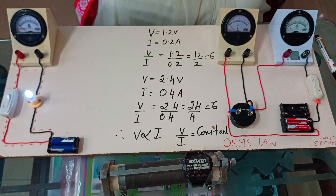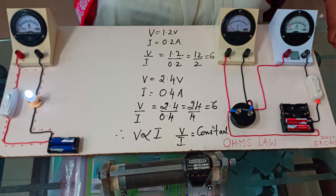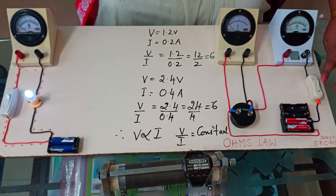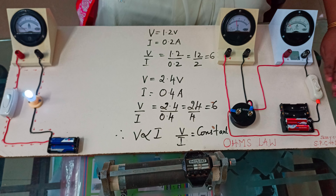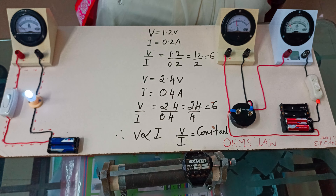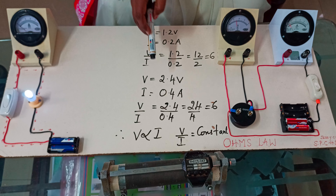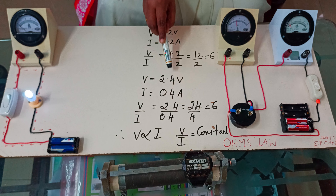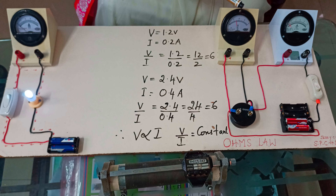In order to make the current flow, I will switch on. Hope you can see. Now the bulb is glowing. There is flow of electric current and the current reading can be found out by the ammeter.